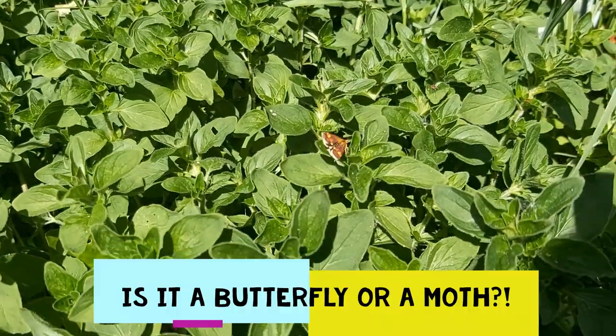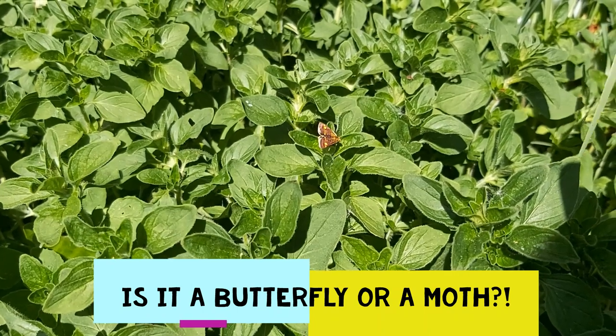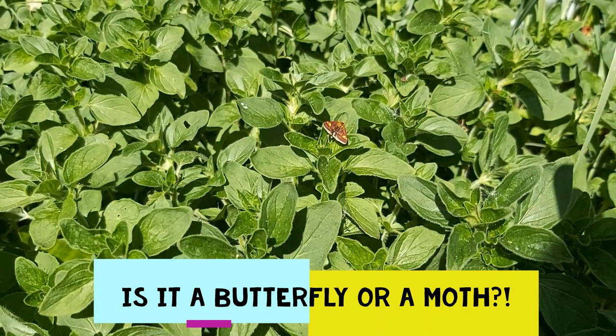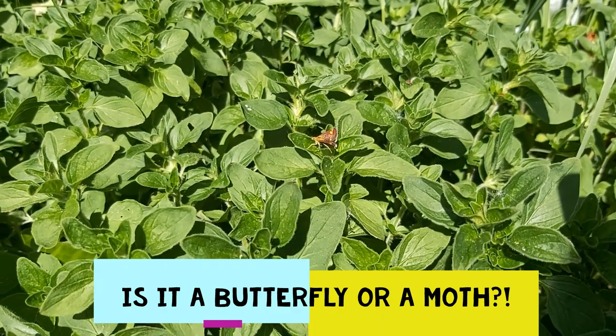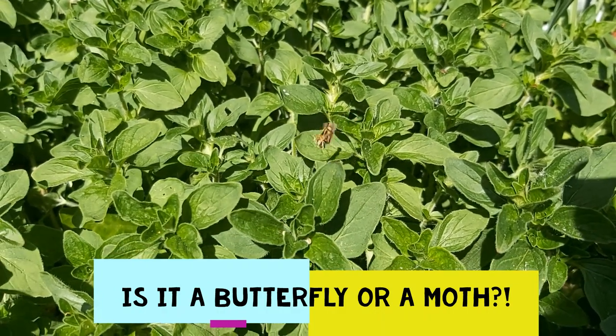Here's a video of something — I want you to work out whether it's a butterfly or a moth. Did you guess what it was? It was a small purple and gold moth, or a mint moth as some people call them. It was flying in the day which might have caught you out, but it had quite long antennae and when it rested on the leaves it held its wings flat.